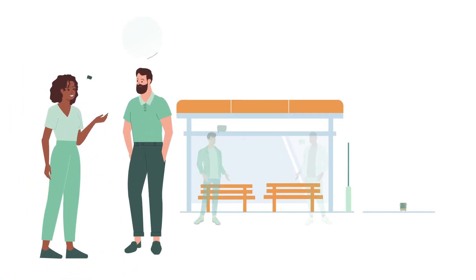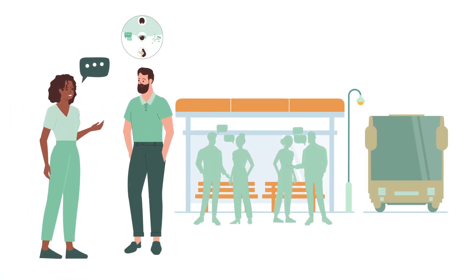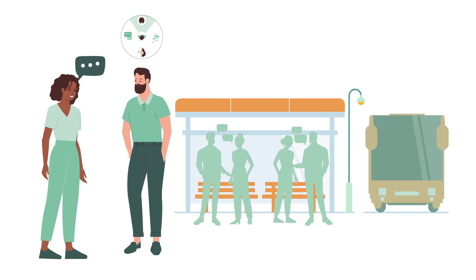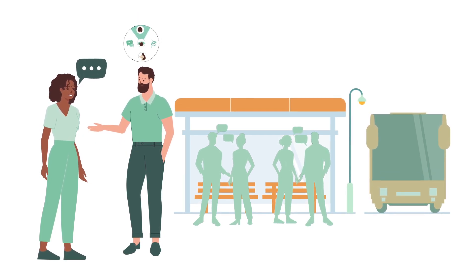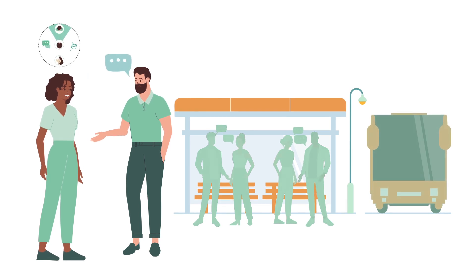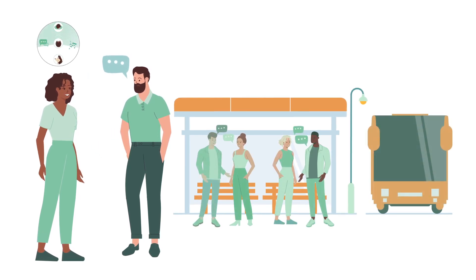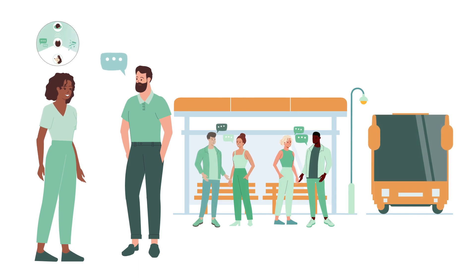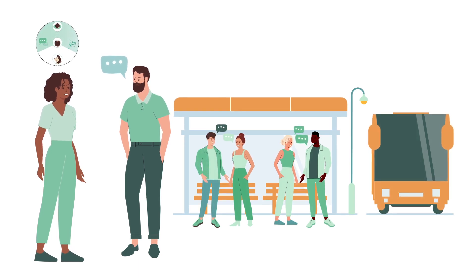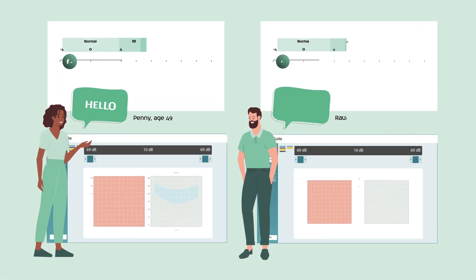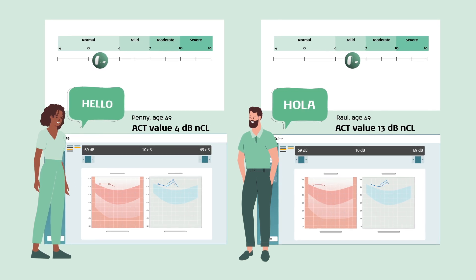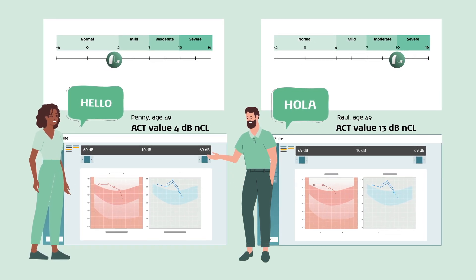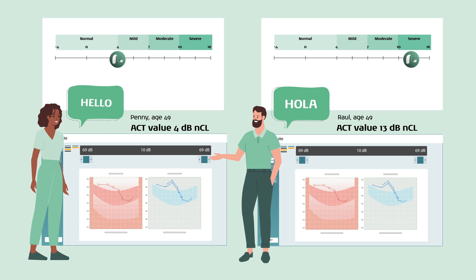In the real world, this means Raul will experience significant hearing in noise challenges. He will therefore need a lot more help from his hearing aids when listening to speech in noise. As Penny has a low ACT value, she will not need so much help from her hearing aid adaptive features, and these can benefit from being left to focus on the more natural aspects of sound. Although Penny and Raul have the same hearing loss by pure tone audiometry, we need to program their adaptive hearing aid features differently because they have different ACT values.